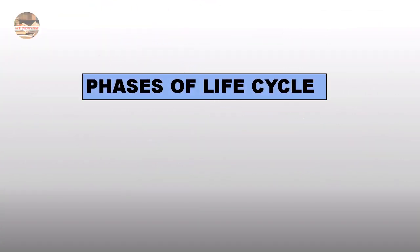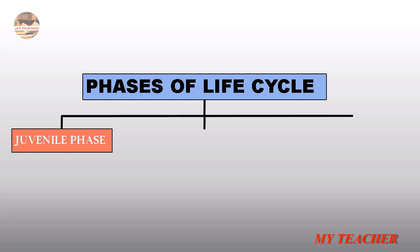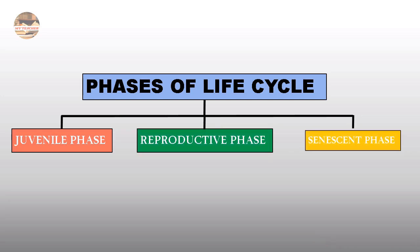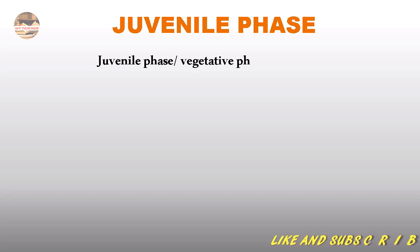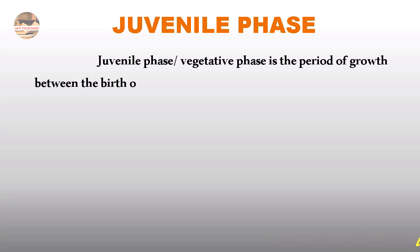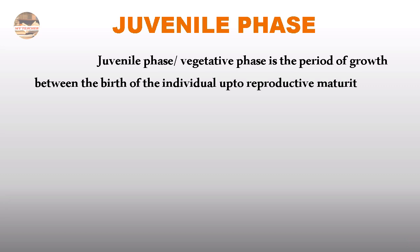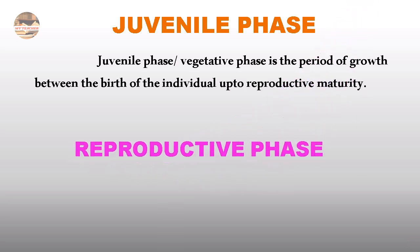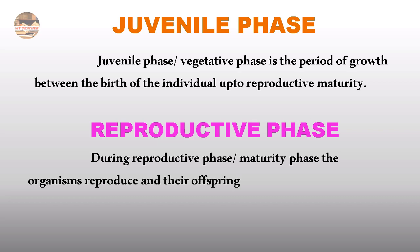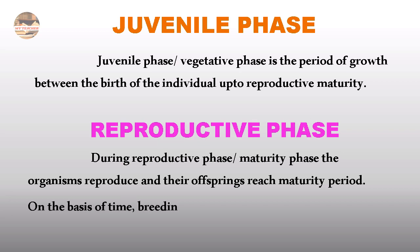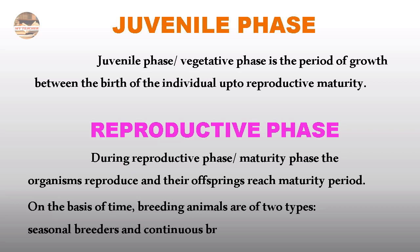Phases of Life Cycle: Juvenile Phase, Reproductive Phase, and Senescent Phase. The Juvenile Phase, or Vegetative Phase, is the period of growth between the birth of the individual up to reproductive maturity. During the Reproductive Phase, the organisms reproduce and their offspring reach maturity. On the basis of time, breeding animals are of two types: Seasonal breeders and Continuous breeders.